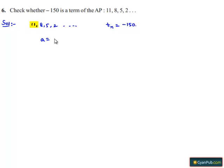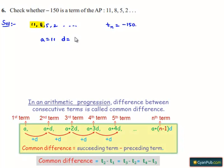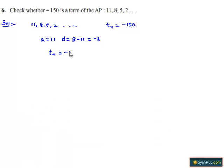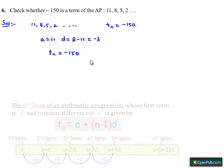Here A is equal to 11 and D is equal to 8 minus 11 that is nothing but minus 3. And we have TN is equal to minus 150. Let us find the value of N.